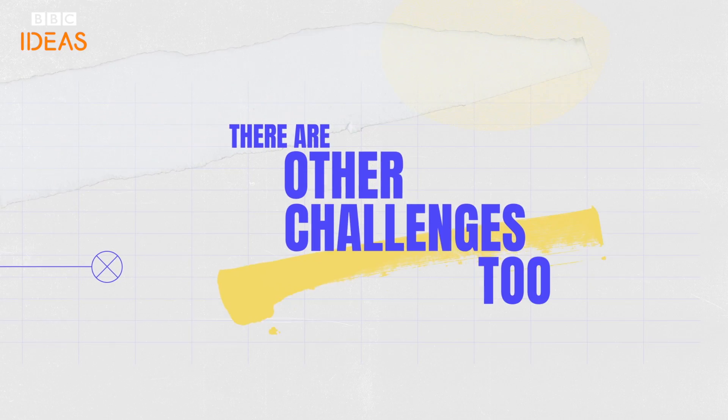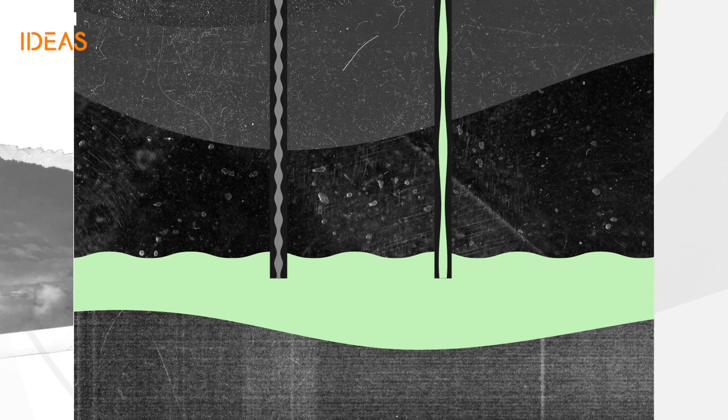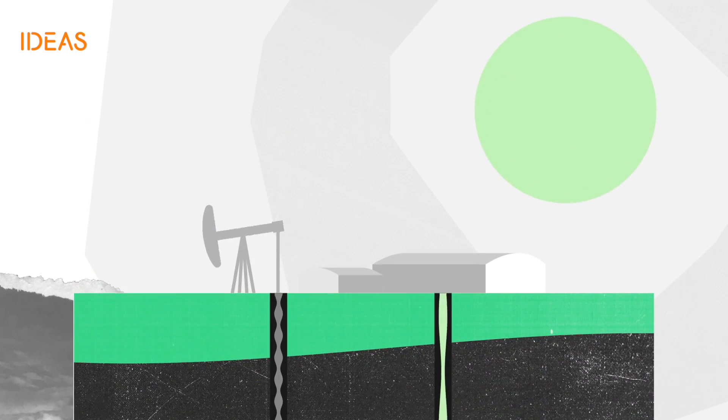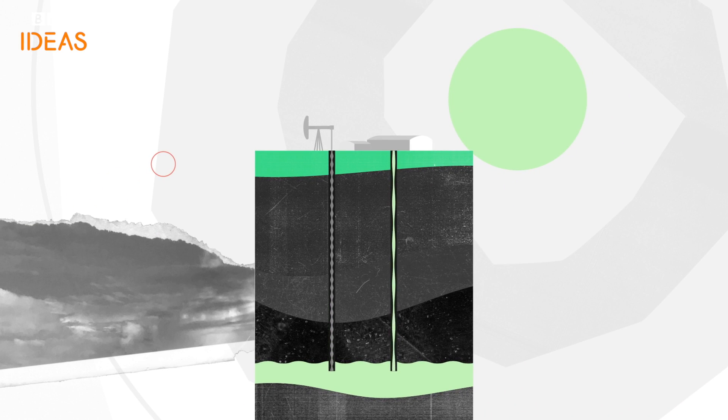There are other challenges too. Extracting lithium uses vast amounts of groundwater pumped to the surface to force out the brine. It's left to evaporate. The process can lead to water shortages and leaves behind toxic waste.